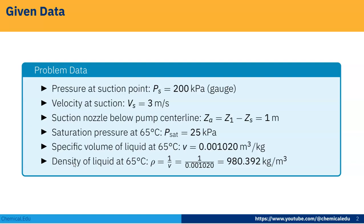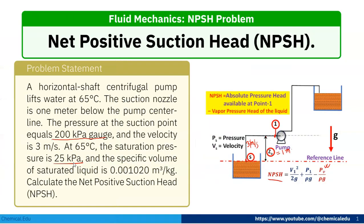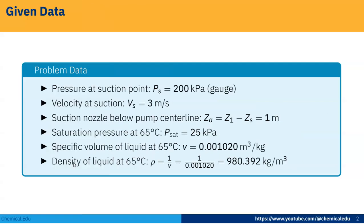First we have to check the problem data given. Pressure at suction point is 200 kPa gauge. Velocity at suction Vs is 3 meters per second. Suction nozzle below pump center line, that is ZA = Z1 minus Zs = 1 meter. Saturation pressure at 65 degrees centigrade, P saturated, is equal to 25 kPa. Specific volume of the liquid at 65 degrees centigrade is 0.001020 meter cube per kg. So, density of the liquid at 65 degrees centigrade, rho, is 1 by V, that is 1 by 0.001020, so that is 980.392 kg per meter cube.